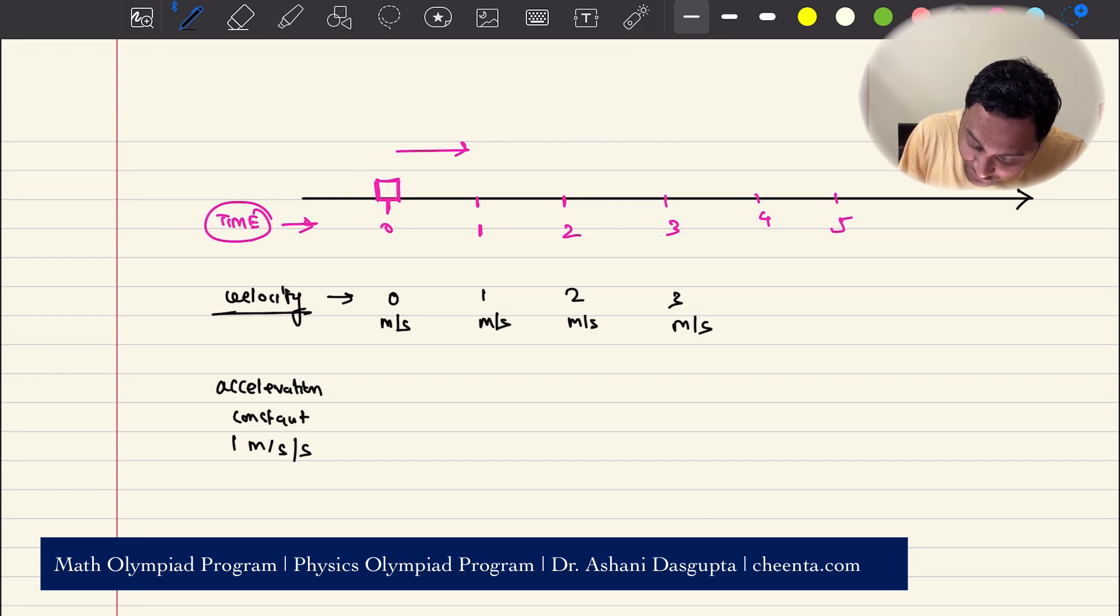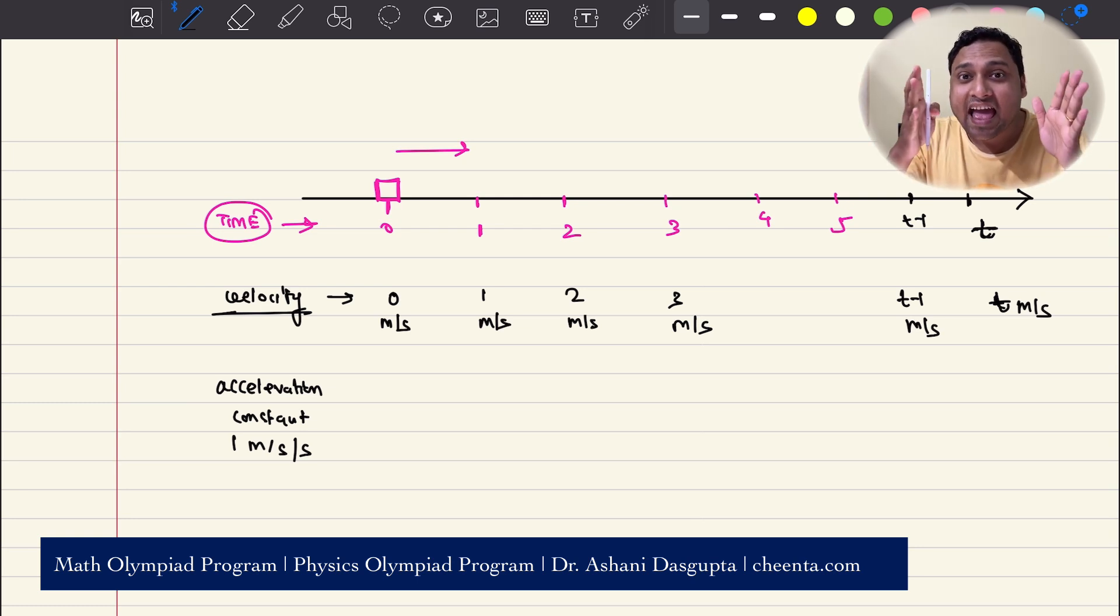Like this, at the end of t seconds, it is t meters per second. At the end of t minus 1 seconds, it's t minus 1 meters per second. Every second the velocity increases by one meter per second. That is the meaning of acceleration is one meter per second per second.